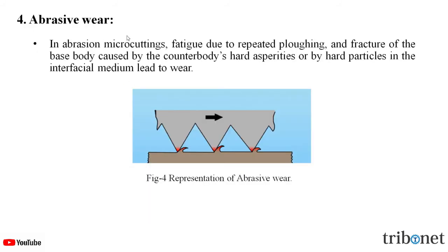The second mechanism is abrasive wear. In this case, it is due to the repeated plowing and fracture of the base body caused by the counter body's hard asperities or by hard particles in the interfacial medium, leading to wear. As we can see in the figure, the sharp-edged surface is peeling the counter surface, leading to the formation of metallic chips.